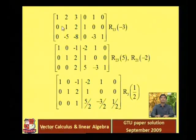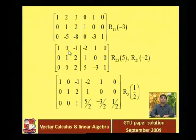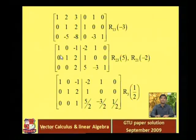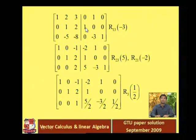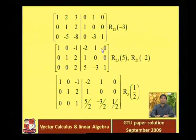Next process: multiply the second row with minus 2 and add into the first row. So the first row becomes: 1×1 + 0 = 1; 1×(minus 2) + 2 = 0; 2×(minus 2) + 3 = minus 1; 1×(minus 2) + 0 = minus 2; 0×(minus 2) + 0 = 0.